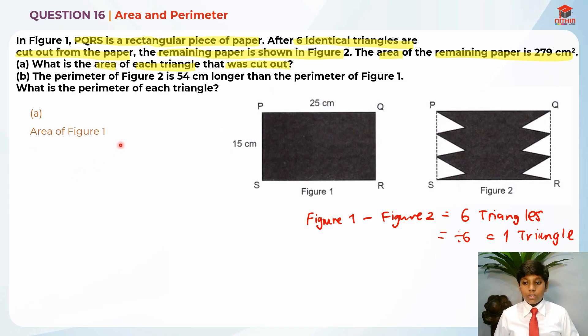Let's find the area of figure 1: 25 times 15, which is 375 cm². After this, we minus off figure 2, which is 279 cm². So 375 minus 279 gives us 96 cm². This is 6 triangles, so divide by 6 equals 1 triangle. 96 cm² divided by 6 gives us 16 cm². And this is the answer for part A.